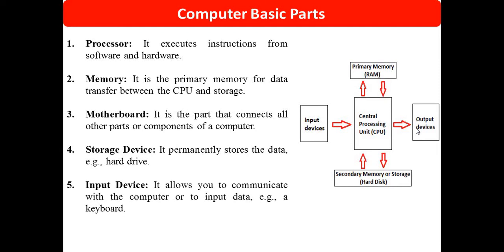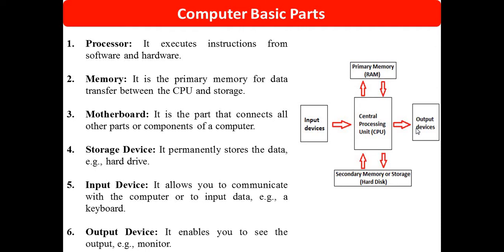We are discussing each part one by one. There are five parts: processor, memory, motherboard, storage device, and input devices. The processor executes instructions from software and hardware — as you may have heard, 'I have an i3 processor' or 'I have an i5 processor.' The processor plays an important role because calculation speed depends on it. Memory stores data. The motherboard connects all other components. Storage devices permanently store data. Input devices give instructions to the computer, and output devices enable you to see the output, like a monitor.